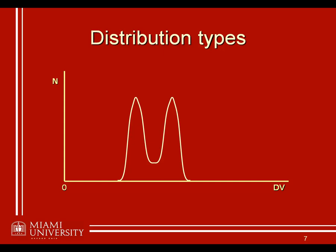Another type of distribution is one where there's not a single peak, as in the normal and skewed distributions. Instead, there might be two different scores that are occurring relatively frequently while the other scores are not. This is what we call a bimodal distribution. The mode is the most frequently occurring score in a distribution, so as the name bimodal suggests, there are two modes — two very frequently occurring scores. Now, these two scores don't have to occur equally frequently. We can have a bimodal distribution where one score occurs very frequently and another occurs much more frequently than most others but not as much as the first — that would still be classified as a bimodal distribution.